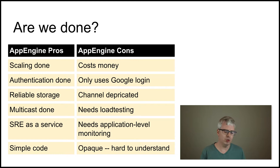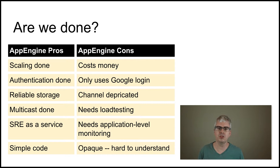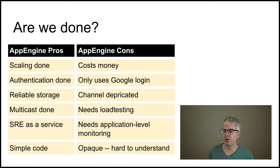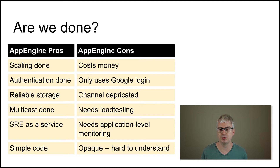So I've shown you a finished application — are we done? I've shown you an App Engine application where Google has done a lot of work for us, and it gives us a lot of advantages. Our scaling story is pretty much done, although we haven't done any load testing so we don't know how well our particular application scales on App Engine. Authentication is handled for us. It gives us reliable storage, multicast through the channel mechanism to send messages to all browsers currently using our application, and we get to take advantage of Google's site reliability engineers. We get to write fairly simple code and rely on libraries provided for us.